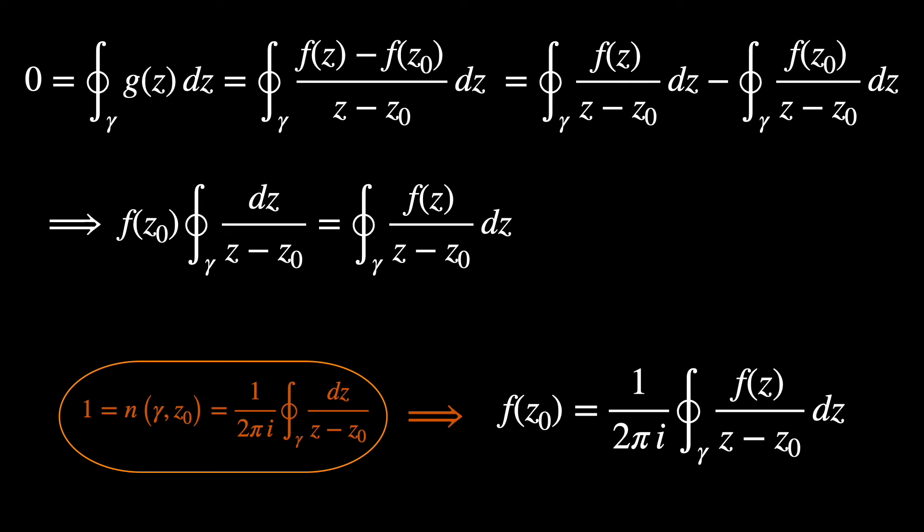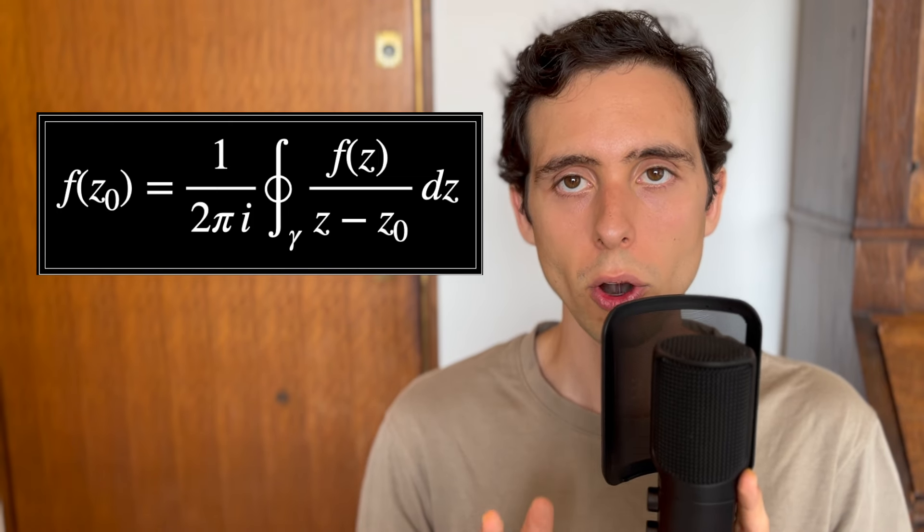we have that this integral over gamma of dz/(z - z0) is 2πi, which implies that f(z0) is just 1/(2πi) times the integral over gamma of f(z)/(z - z0)dz. And that's Cauchy's integral formula.